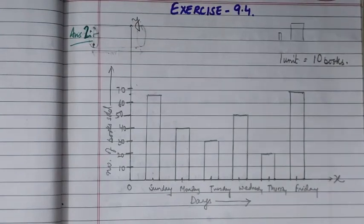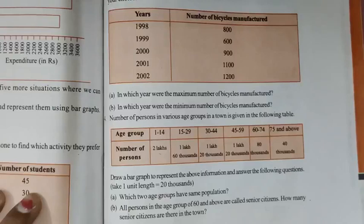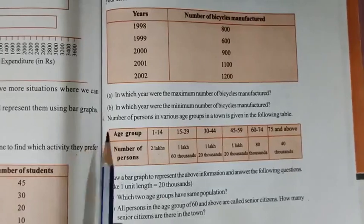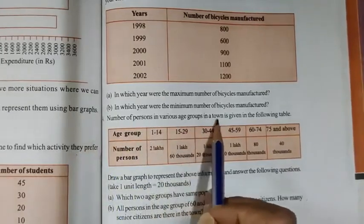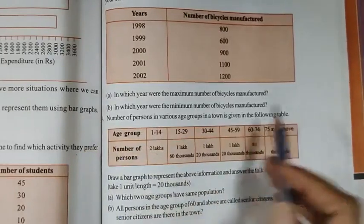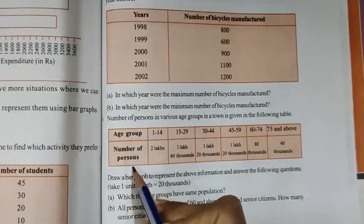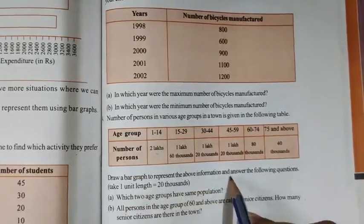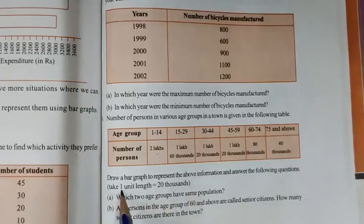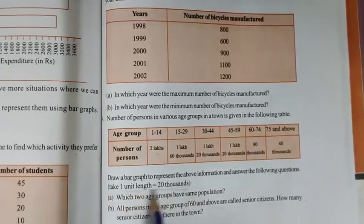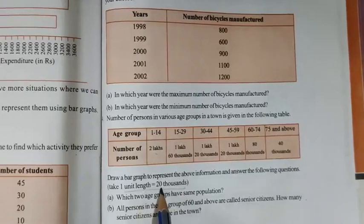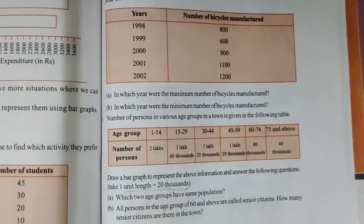Now let us do question number 4. Questions 1 and 3 you are going to do by yourself. In question number 4, it says the number of persons in various age groups in a town is given in the following table. We need to draw a bar graph to represent the above information. Here the scale has been given: 1 unit length equals 20,000. So we have to take the scale of 20,000.